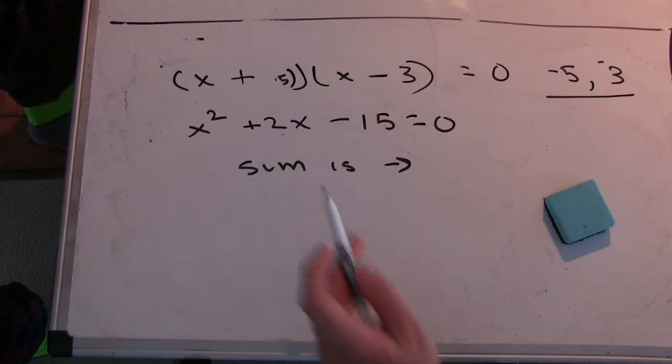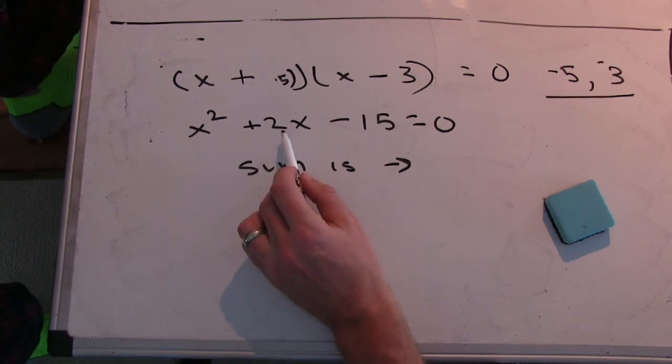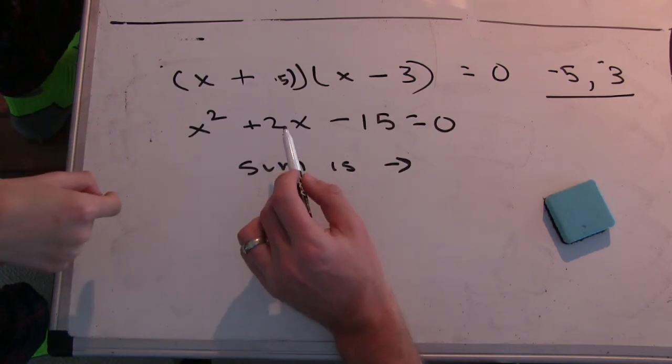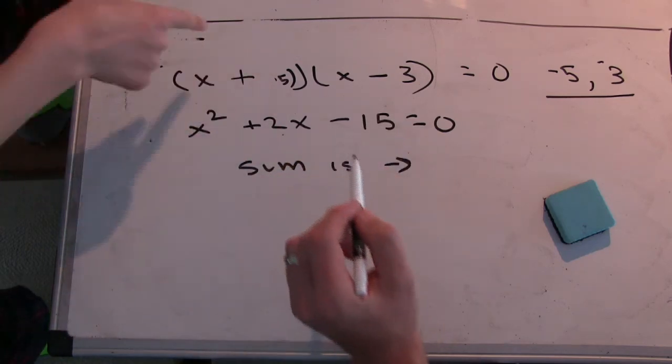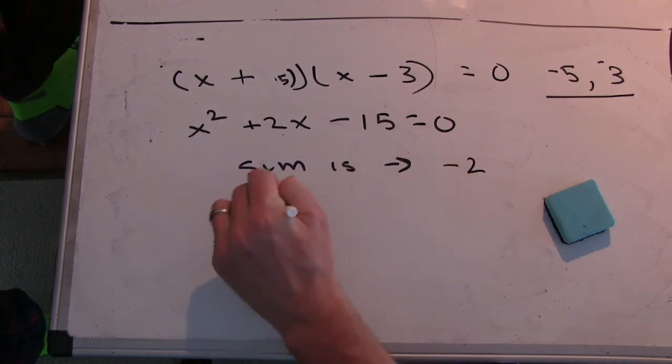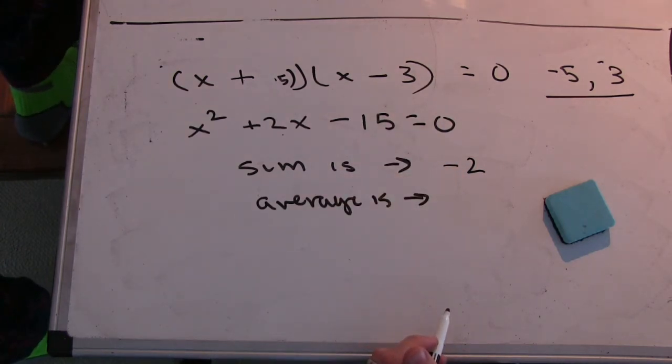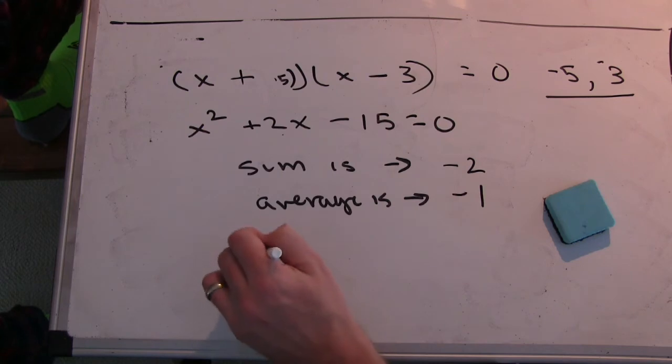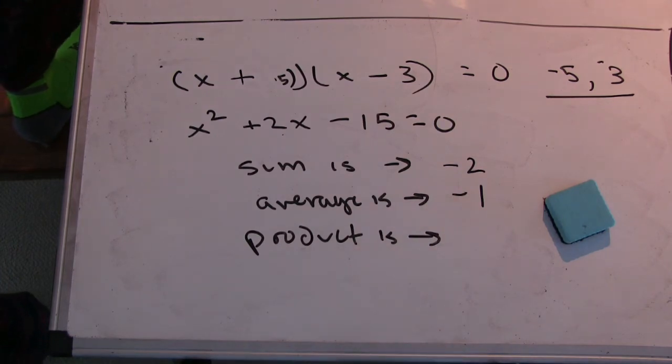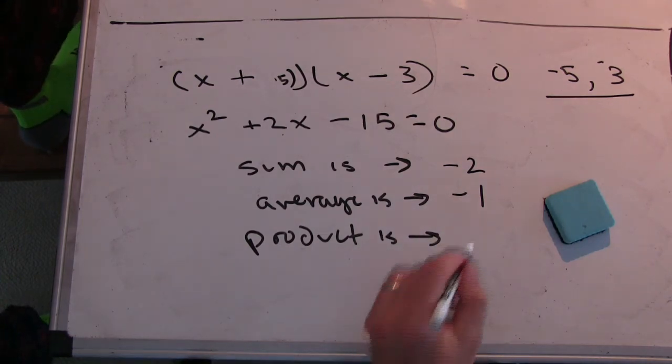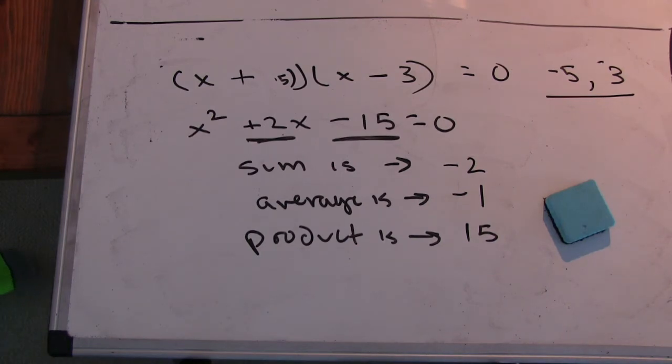Okay, so do you remember why it's negative two, not two? From this? Because this is actually the negative of the sum of the roots. That's right. So the sum of the roots, when we had it in the form of ax squared plus bx plus c, the sum was negative b over a. So the sum is negative two. The average then is what? It would be negative one. Negative one. And the product is what? It would be negative fifteen. Negative fifteen. So the sum comes from this term, but it's the negative of it. And the product comes from this term, and it matches.